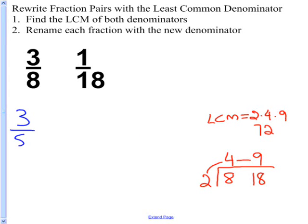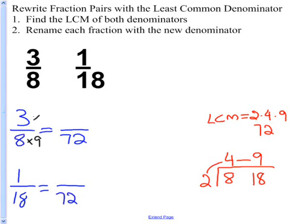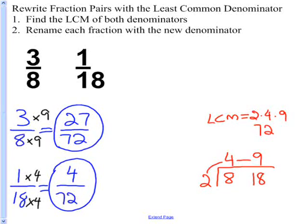So now I want to rewrite 3/8 as a fraction with 72 in the denominator rather than 8, and 1/18, I want to rewrite that also with 72 in the denominator rather than 18. So for the first fraction, I think to myself, what do I multiply 8 by to get 72? 8 times 9 is 72. So I also have to multiply 3 times 9. 3 times 9 is 27. So 3/8 equals 27/72. On my second fraction, 18 times what is 72? 18 times 4 is 72. So I also multiply my numerator times 4. 1 times 4 is 4. So now I've rewritten 3/8 and 1/18 so they have the same denominator, 72. So my answers are 27/72 and 4/72.